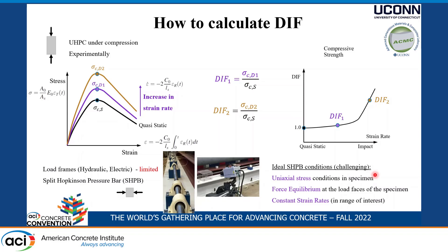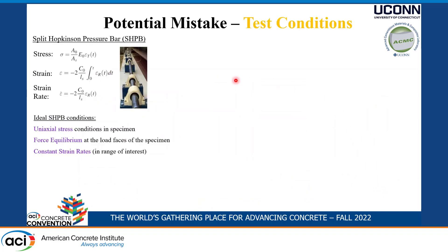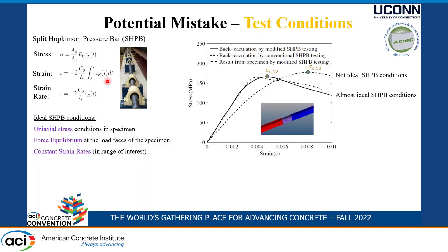If you read papers where researchers do high strain rate testing, often they do not prove that those ideal conditions are being met closely enough — so researchers taking that data into a finite element model may already be making the first mistake. If conditions are ideal, you use the standard equations to calculate stress from bar strains, strain from reflected bar strains, and strain rates. But if you assume ideal conditions and use those equations when you actually do not have them, you make a mistake.